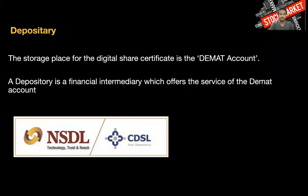Next is the depository. Initially all shares were paper documents — if you bought a share, there would be a paper document stating that you own those shares. Later this was changed and everything became electronic. Every share is now digital, and since everything is dematerialized, it is called demat — dematerialized. The storage place is called a demat account, where whatever shares you buy are stored electronically as digital shares.